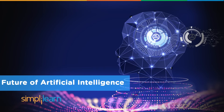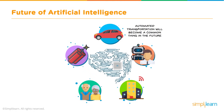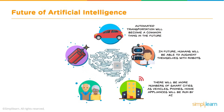Future of Artificial Intelligence. If we see where it's at now commercially and business-wise, where is it going? The imagination is the limit, but you can already see development for automated transportation — it'll become a common thing, maybe as early as 2020 with the final release from industry leaders. Humans will be able to augment themselves with robots. There will be more smart cities as vehicles, phones, and home appliances are run by AI. Home robots will help elderly people with day-to-day work — Japan already has an in-depth program integrating robots to help the elderly, from getting items off high shelves to monitoring falls and contacting doctors in emergencies.